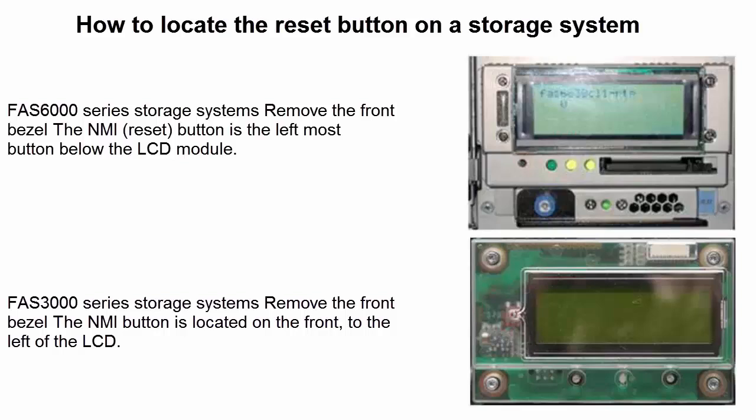In the case of FAS 6000 and 3000 series, remove the front bezel. The NMI button is the leftmost button below the LCD module, as displayed on the screen.